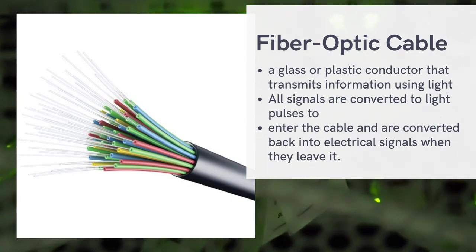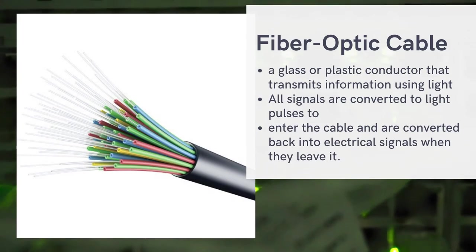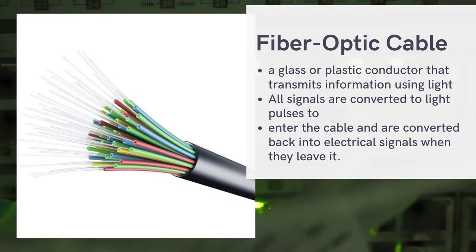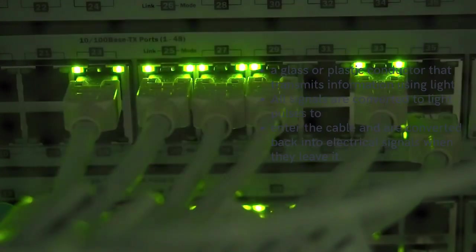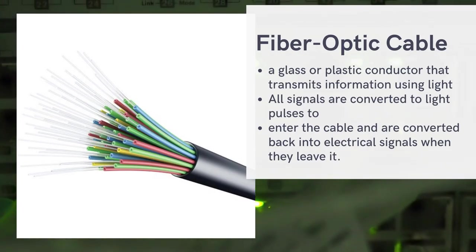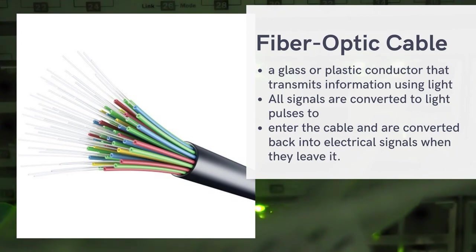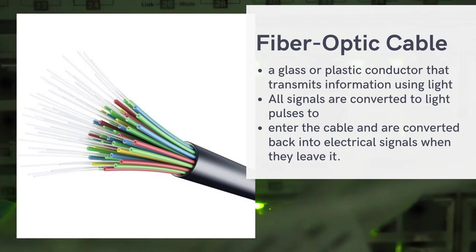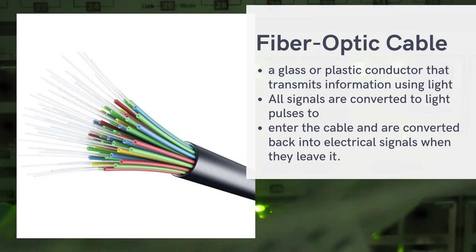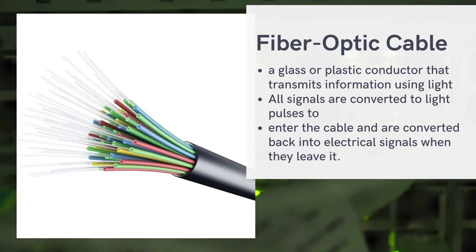Because of coaxial cable's limitations, most networks now use fiber optic cable — the cable used to connect your network to your internet provider. Fiber optic cable is a glass or plastic conductor that transmits information using light, making data transmission much faster. All signals are converted to light pulses to enter the cable and converted back at the other end. Fiber optic allows full-speed data transfer and supports longer distances than coaxial cable. These are the three types of network cables: twisted pair, coaxial cable, and fiber optic cable.